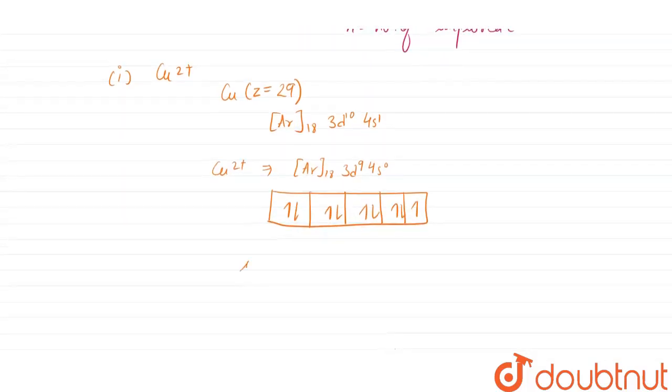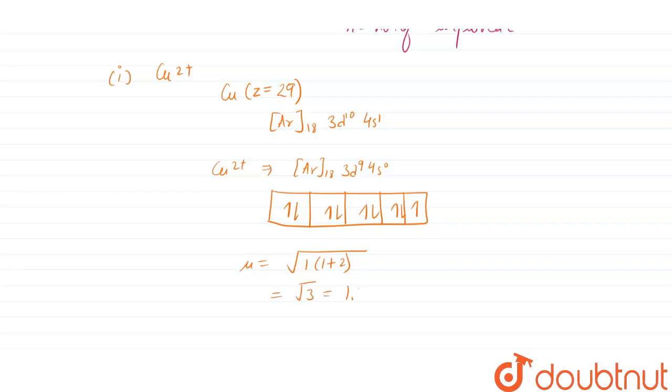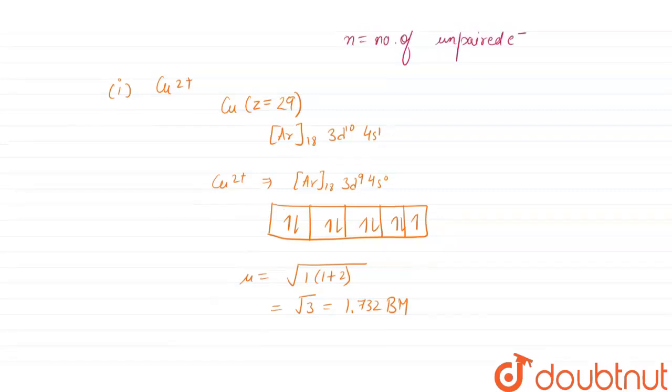μ is equal to square root of 1 into 1 plus 2, which comes out to be root 3, which is 1.732 BM. The magnetic moment of Cu²⁺ is 1.732.